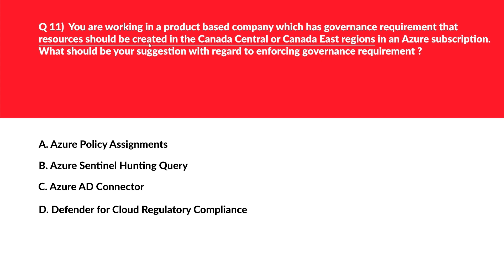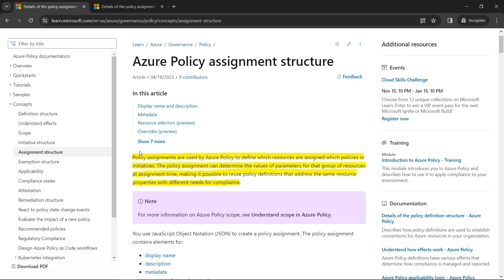If there are governance requirements where resources should be created with specific criteria — such as Canada Central or Canada East region — the trick to answer this kind of question is to look for Azure Policy Assignments in the options. Option A mentions Azure Policy Assignment, so we'll keep this and reject the rest. Policy assignments are used by Azure Policy to define which resources are assigned which policies or initiatives.